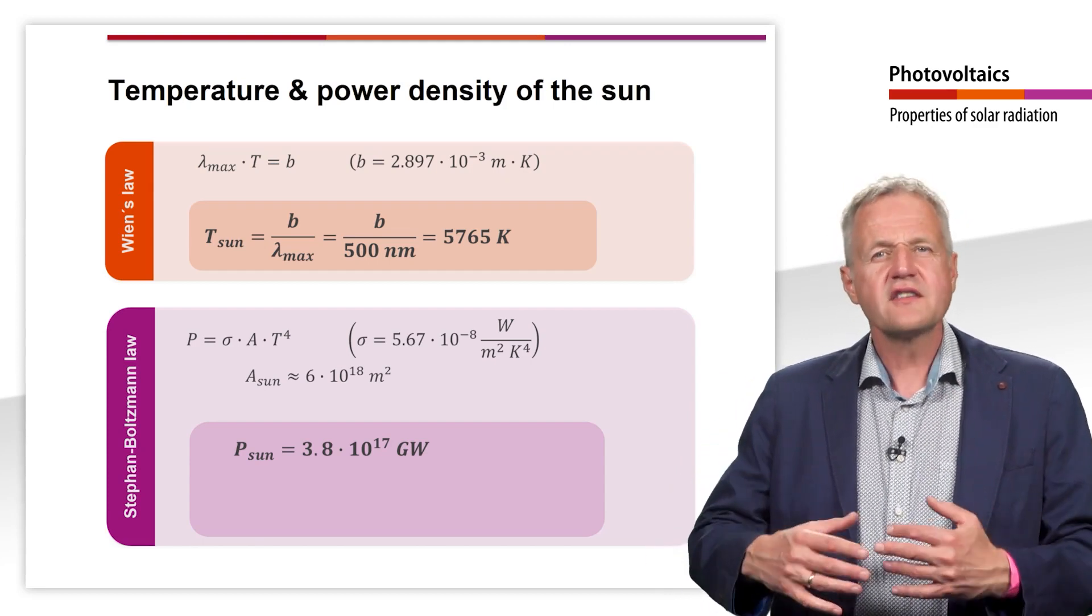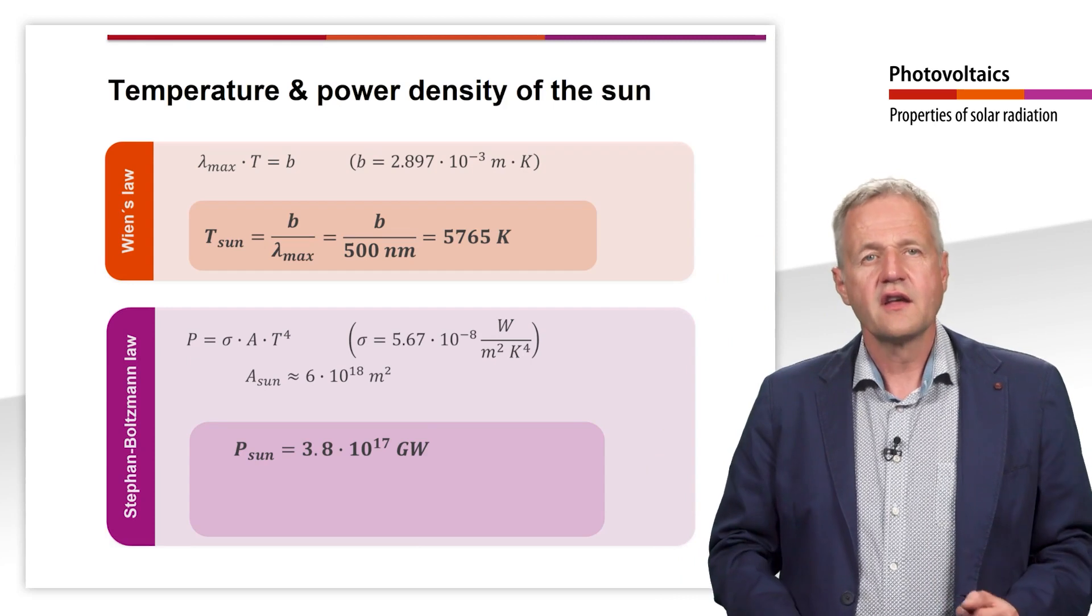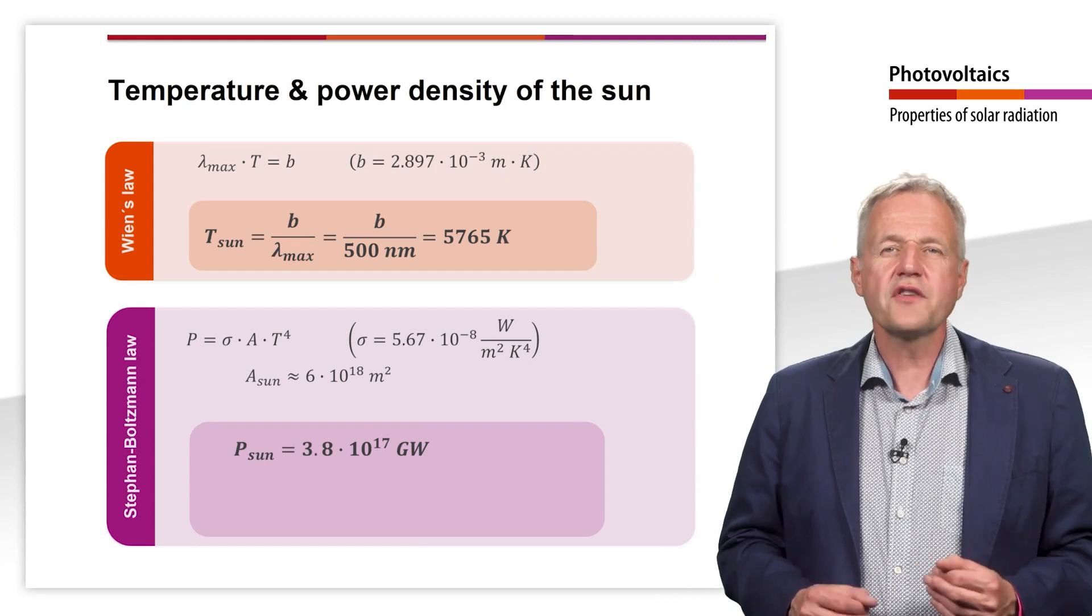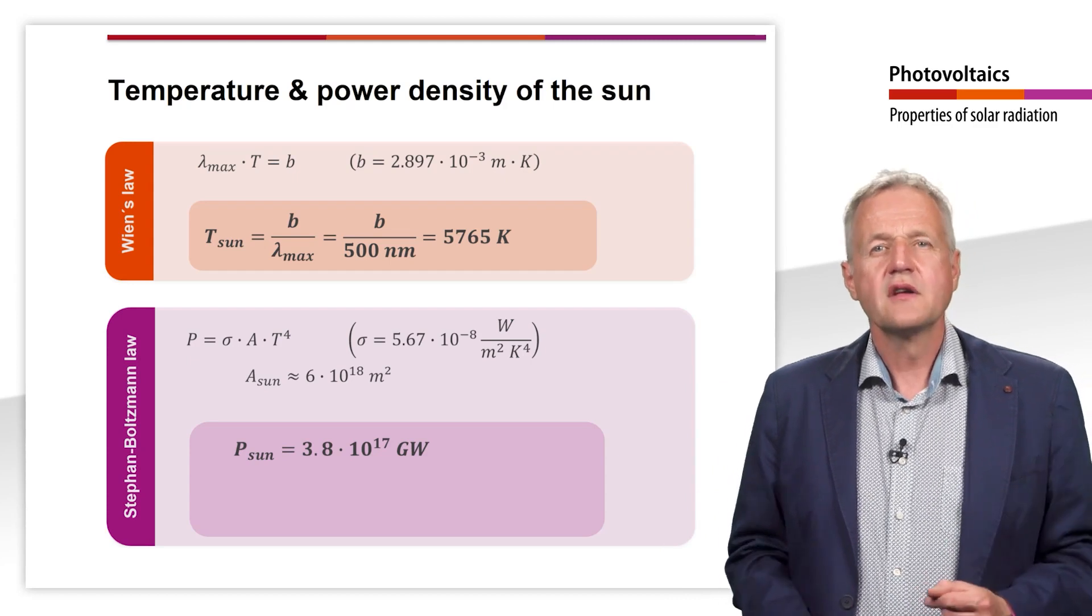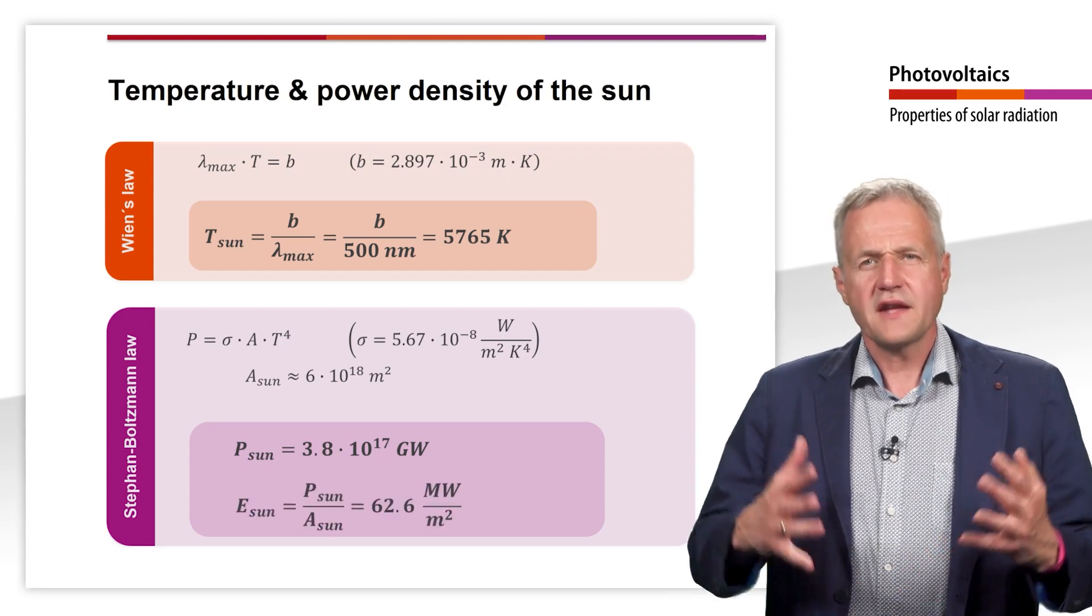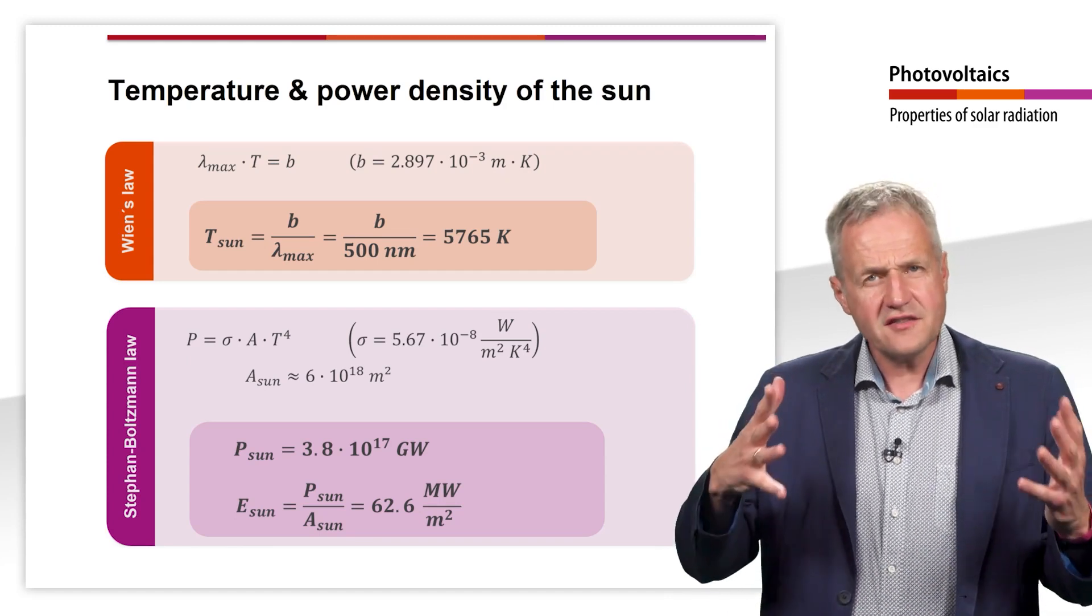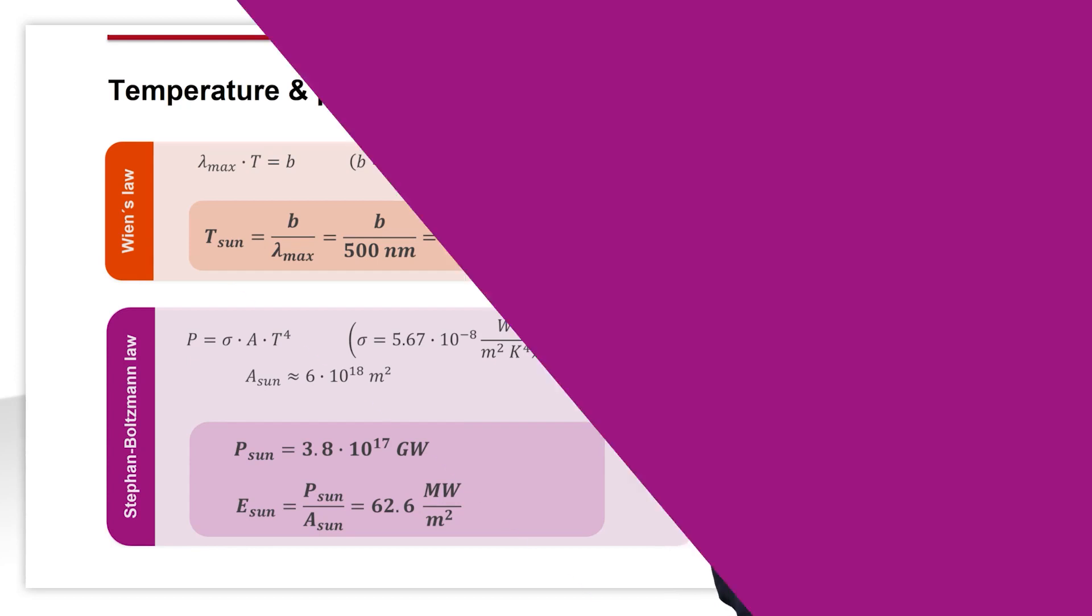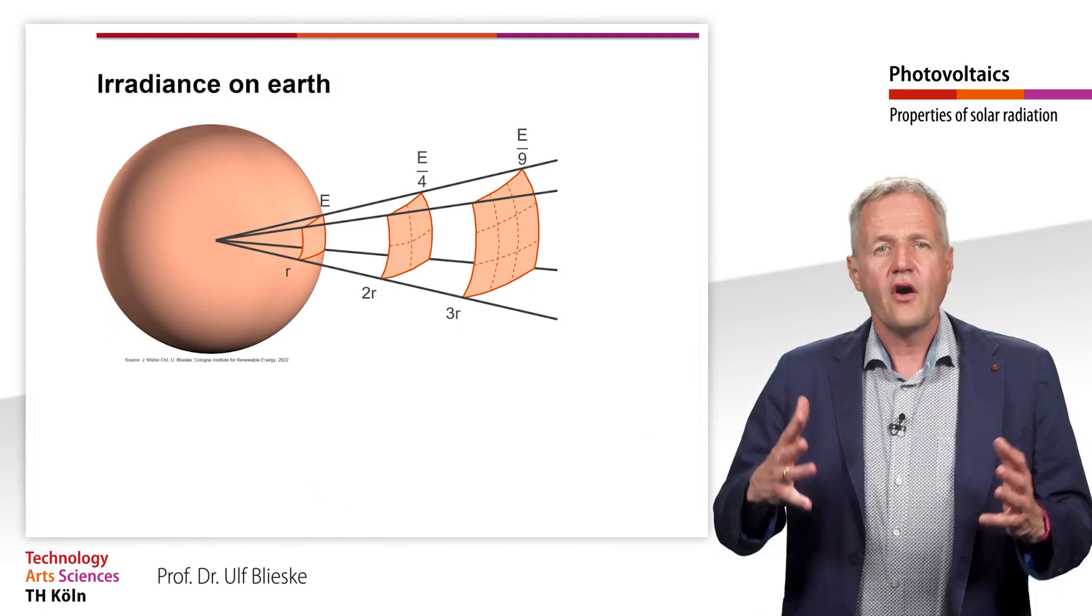However, this incredibly large radiation power is emitted from the entire surface of the sun. If we relate the radiant power to the surface of a light source, we speak of the so-called radiant exitance, m. It basically corresponds to the power density. For the radiant exitance of the sun, in other words, the power per area, a value of 62.6 megawatts per square meter can be calculated. The specific radiation now tells us how much power the sun radiates per square meter of its surface.